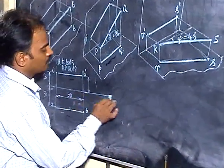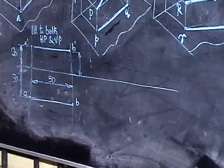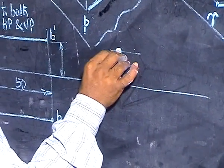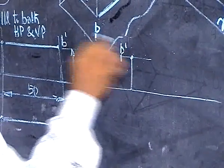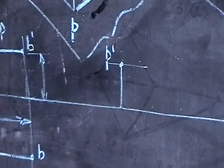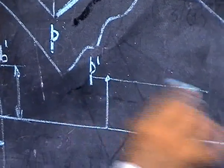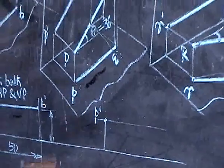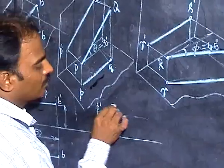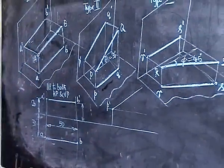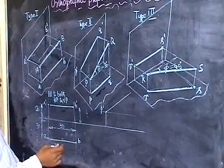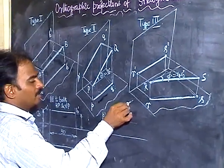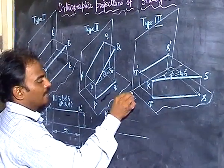Draw the reference line and extend it slightly further. Take the height for P and plot point P' above the XY line. For point Q, the height is not given directly — instead the angle is given, so put the angle of 30 degrees. Take the length of the straight line — assume 50mm — and make an arc. You are getting P'Q', which is the answer for the front view.